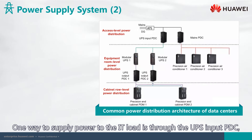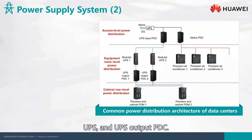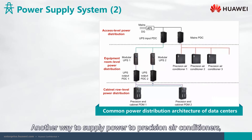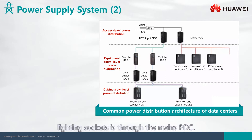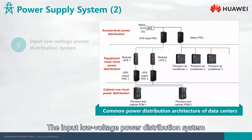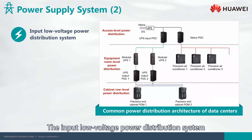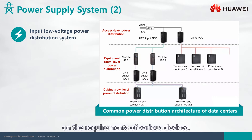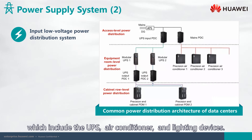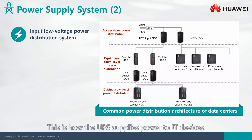One way to supply power to the IT load is through the UPS input PDC, UPS, and UPS output PDC. Another way to supply power to precision air conditioners, lighting, and sockets is through the mains PDC. The input low voltage power distribution system distributes the upstream power based on the requirements of various devices, including UPS, air conditioner, and lighting devices.